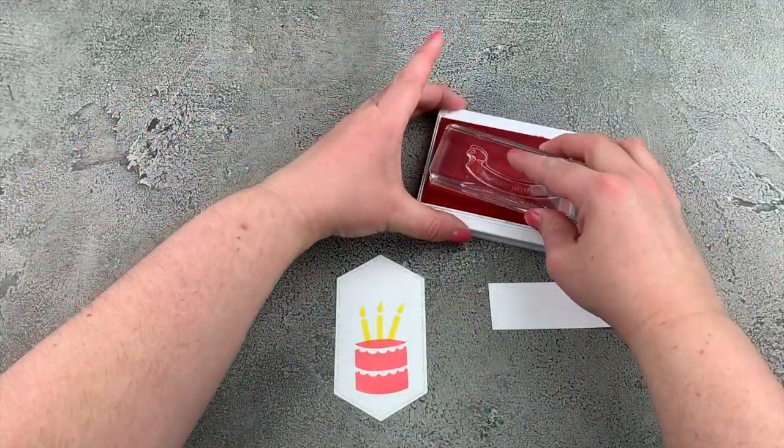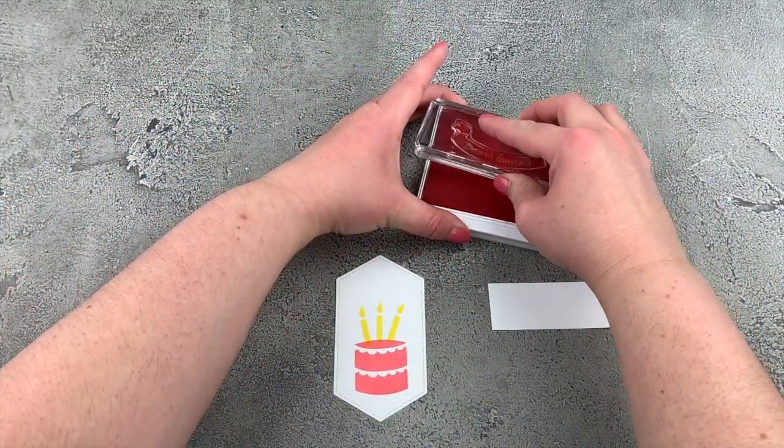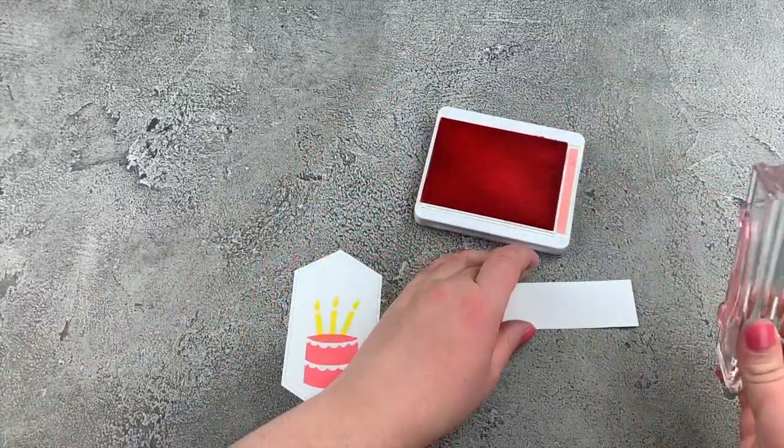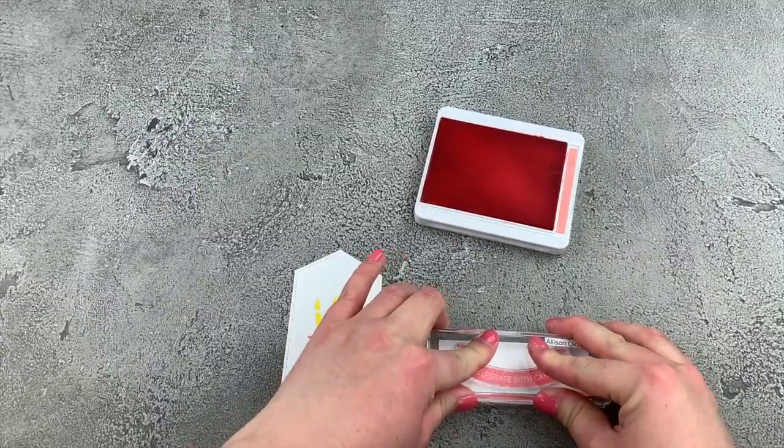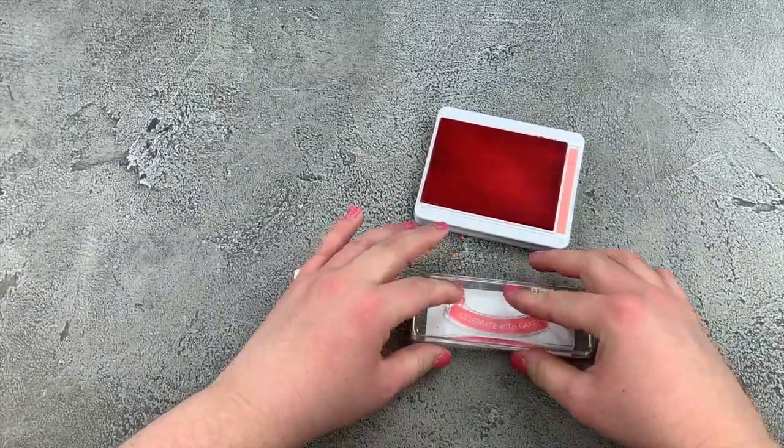And while we have our flirty flamingo ink pad out, let's ink up our stamp that says celebrate with cake. And we'll stamp that onto our scrap of whisper white cardstock.